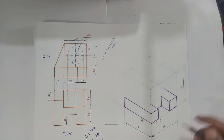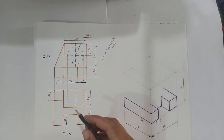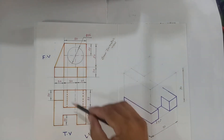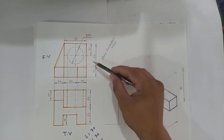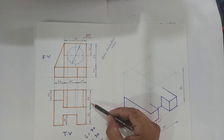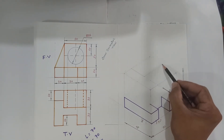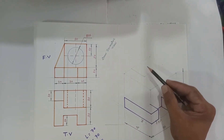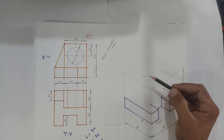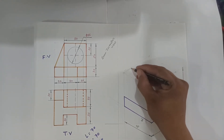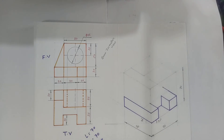Now we have to draw a cuboid having height 50, length 50, and width 35. Width is 35, length is 50. Now we have to measure the height of 50 from each corner — 1, 2, 3.